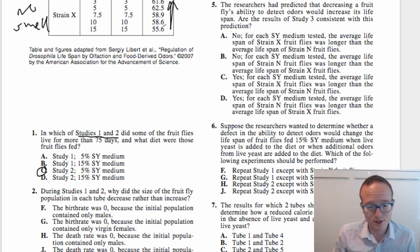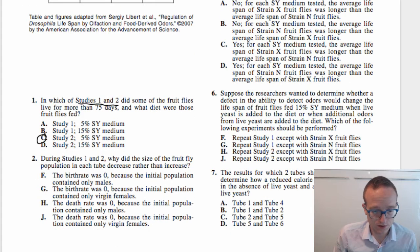A lot of these are just simple lookup questions. During studies 1 and 2, why did the size of the fruit fly population each decrease rather than increase? Okay, so this is a classic sort of answer pattern that I like to call A-B and 1-2. So basically they kind of mix and match these answers in every single combination.